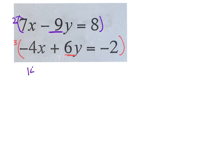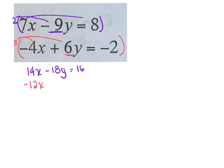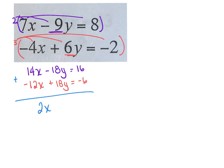Distribute and solve. 2 times 7 is 14x. 2 times negative 9 is negative 18y. And 2 times 8 is 16. Then do the same to the bottom group: 3 times negative 4 is negative 12. 3 times 6 is positive 18. And 3 times negative 2 is negative 6. Now they are ready to add down. 14 and negative 12 give me 2x. The y's will cancel. 16 and negative 6 will give me 10. To finish solving for x, divide by 2. So x equals 5.